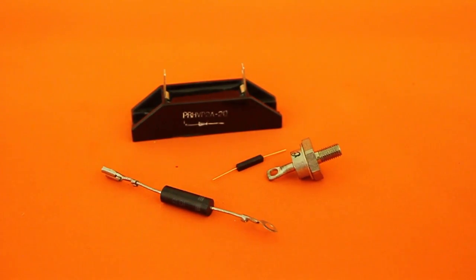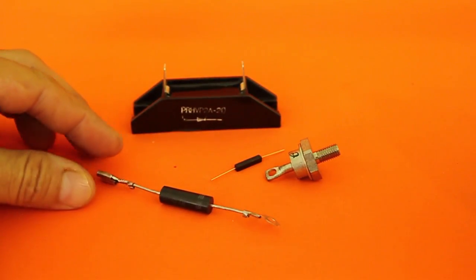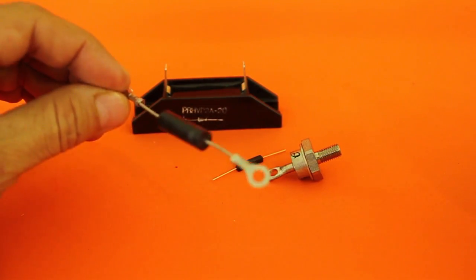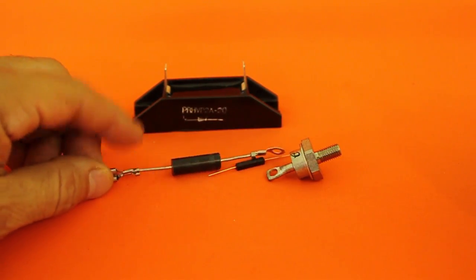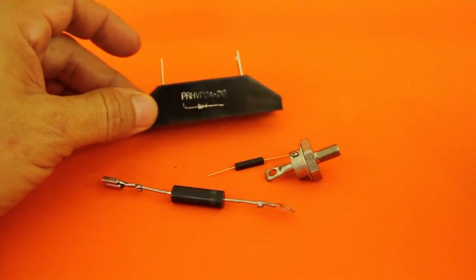In this video I will show you how to check high voltage rectifier diodes such as these ones that go from 2,000 volts for this microwave oven rectifier to 20,000 volts for this big one.